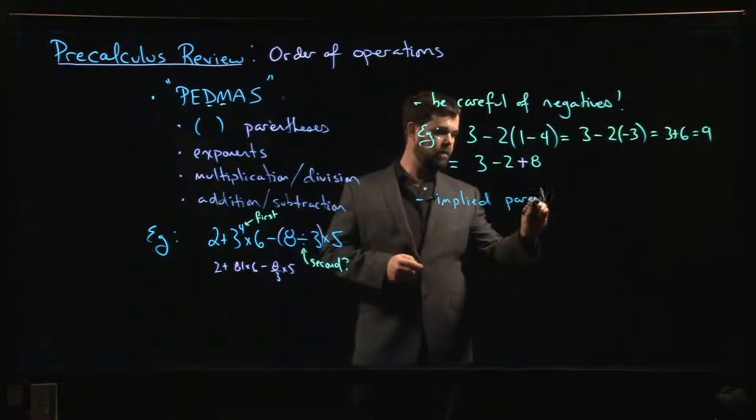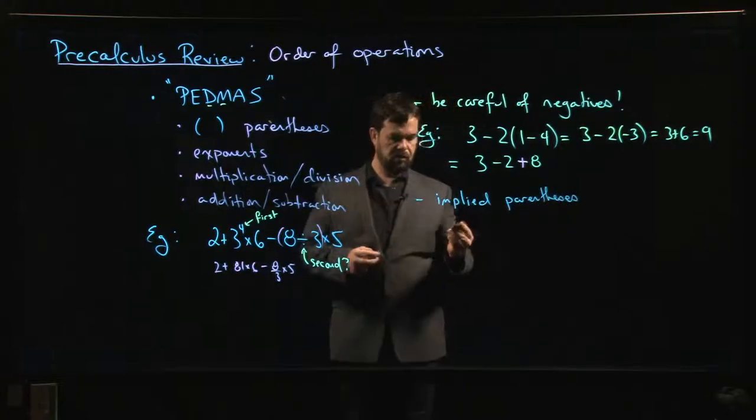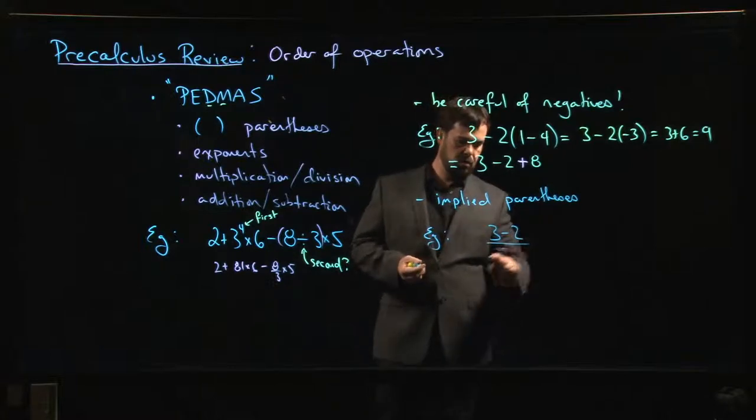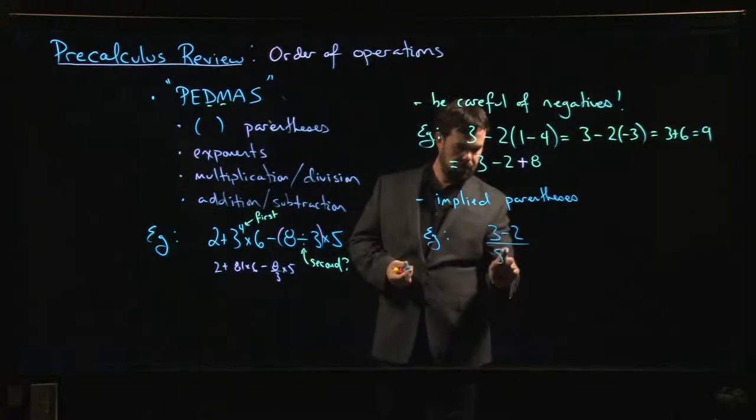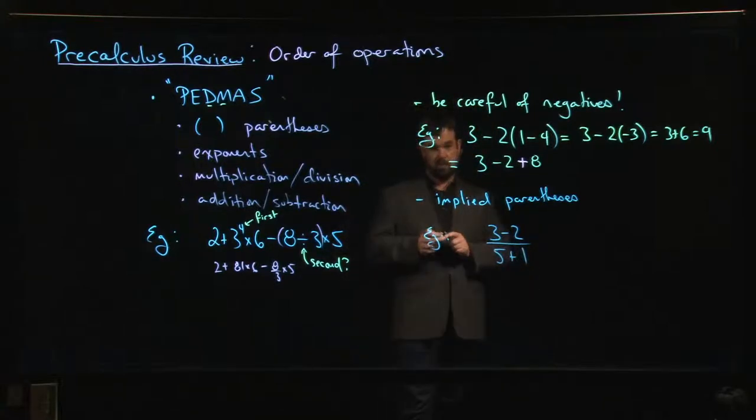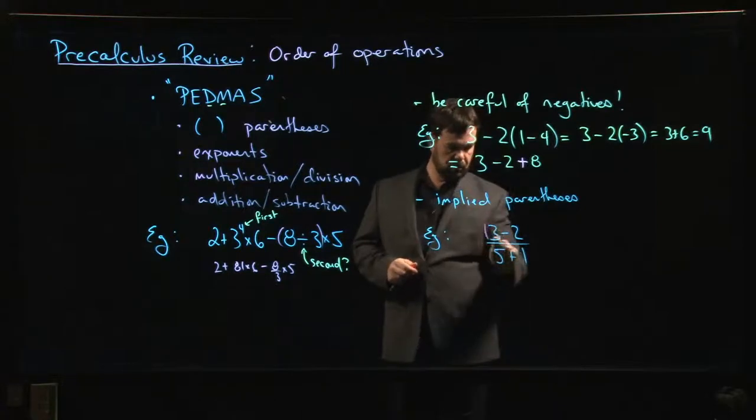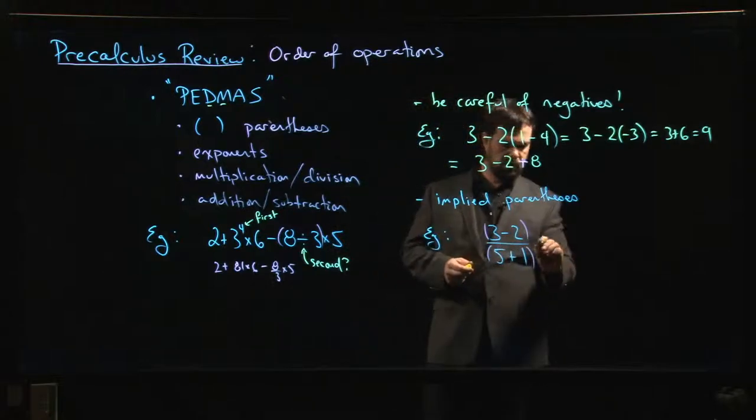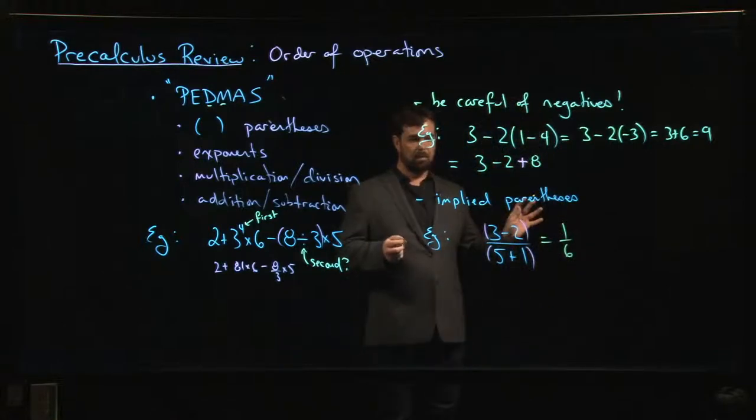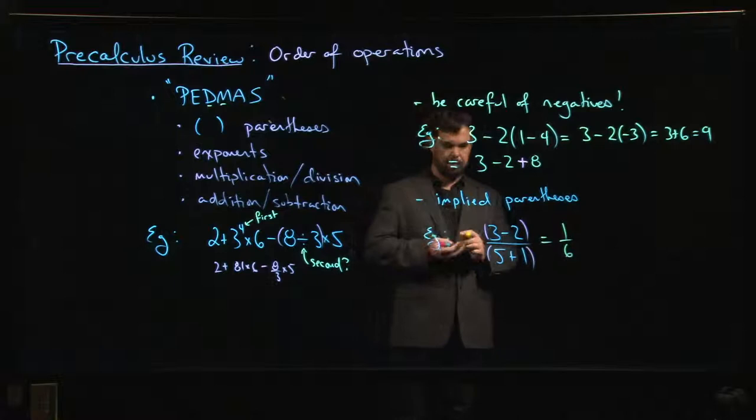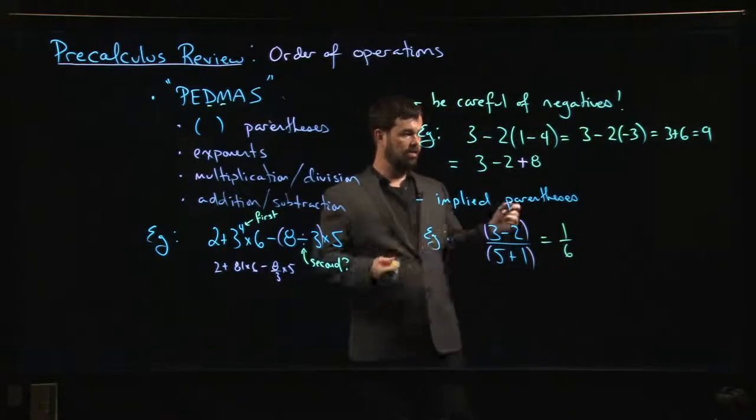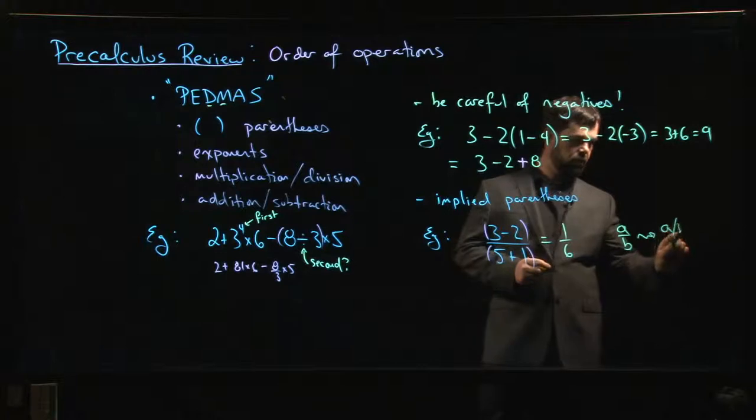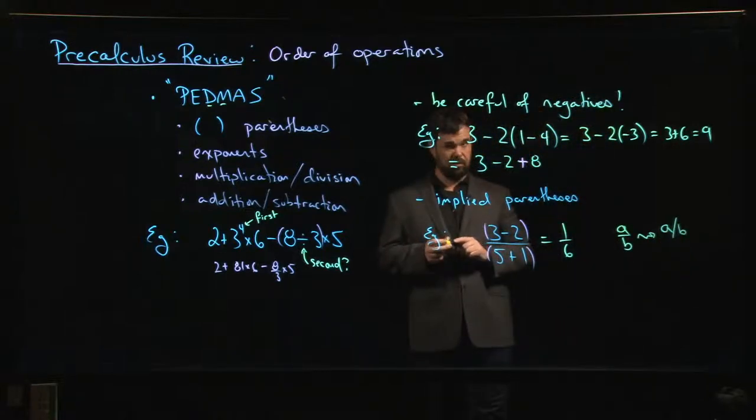You might have something like (3 - 2)/(5 + 1). If you're doing that, you have to remember you need to do 3 - 2 first and 5 + 1 first. Really what you have is 1/6. Where people mess this up is—and I think this is a keyboarding thing—you get into the habit of writing fractions in one line instead of two to save space.